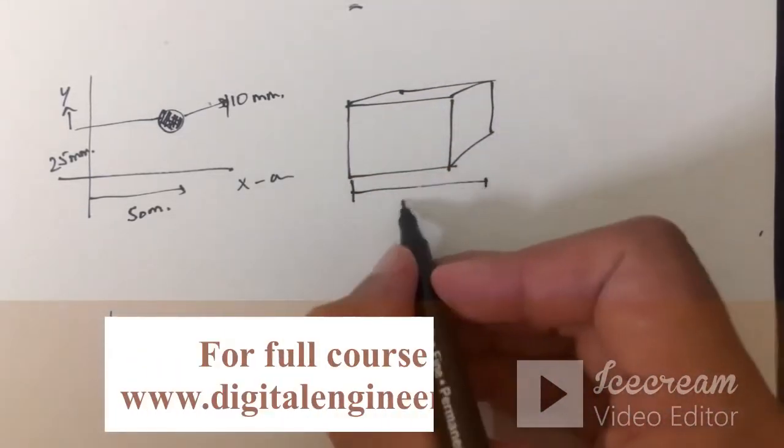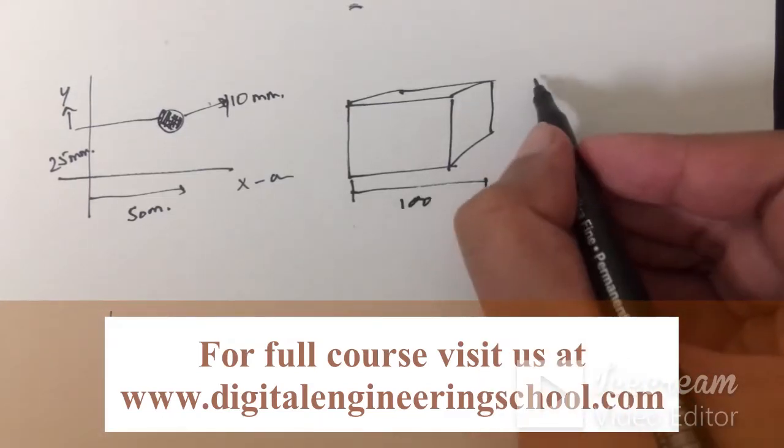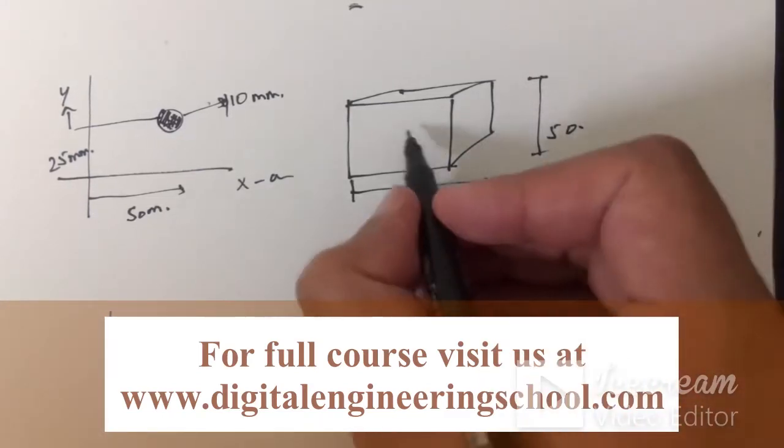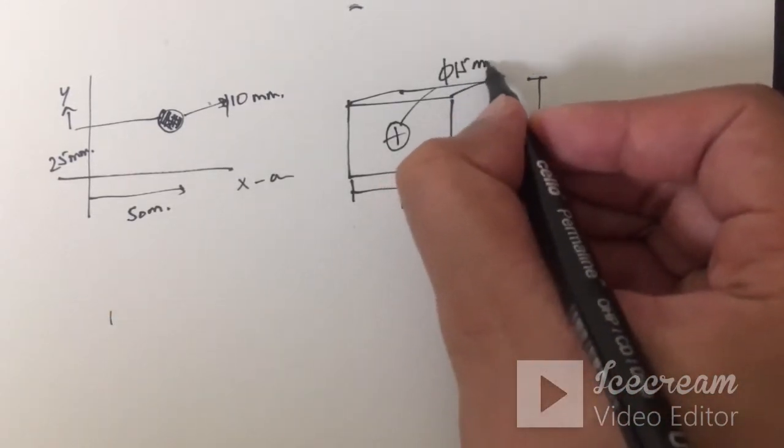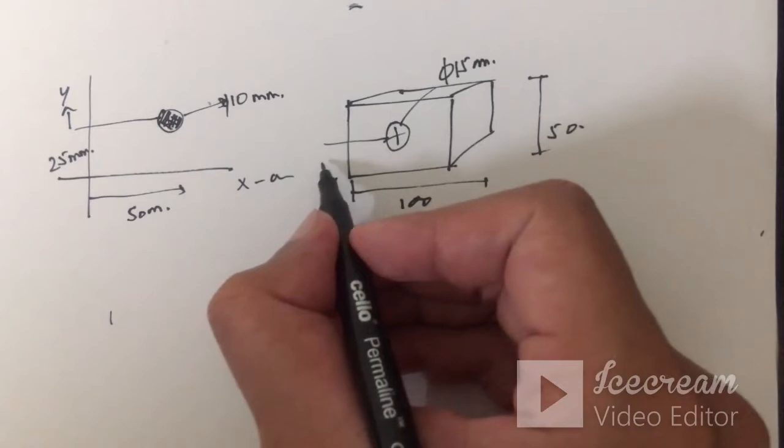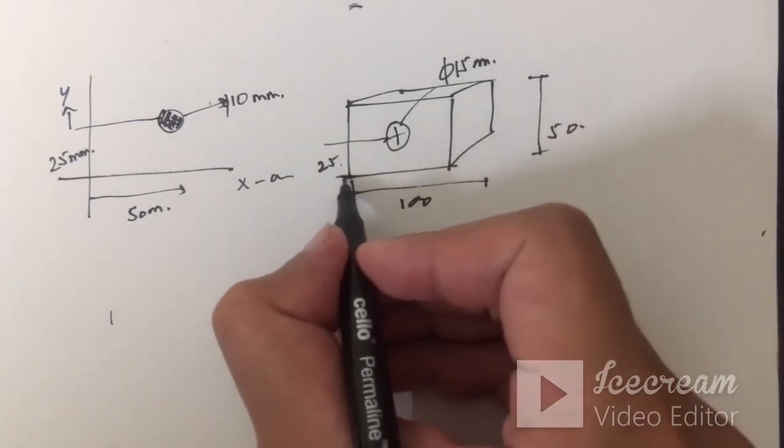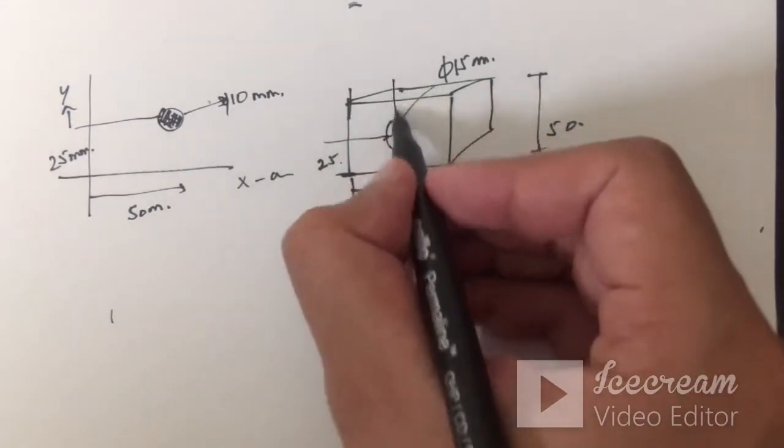Let's say its length is 100 mm and height is 50 mm and we have a hole here which is 15 mm in diameter and the hole is 25 mm from this edge and 50 mm from this edge.